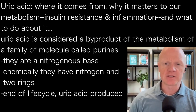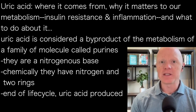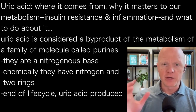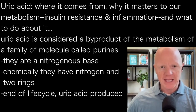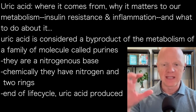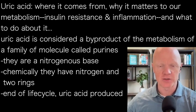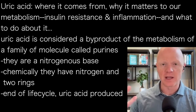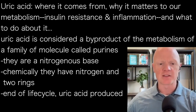Uric acid is generally simply considered a byproduct of the metabolism of a molecule called purines. Purines — this is some deep biochemistry — are a family of molecules sometimes referred to as a nitrogenous base. They have chemistry that gives them a nitrogen and what's called two rings, two chemical rings. When the body needs to metabolize purines, everything has a life cycle — it is put together and then it is broken apart. Uric acid will be a consequence of that.